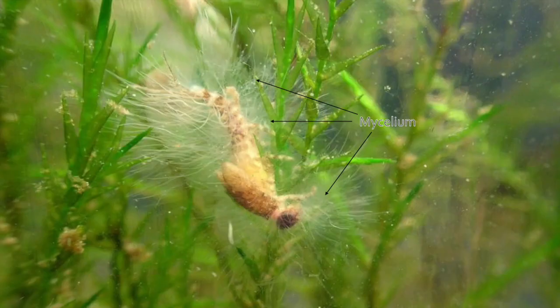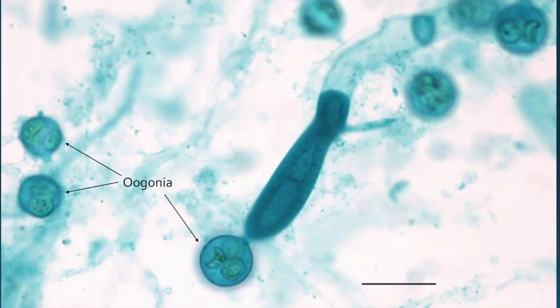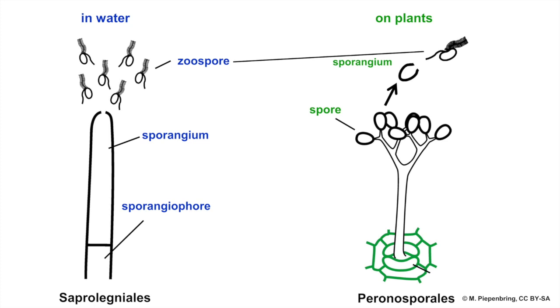Oomycetes are characterized by having a mycelial growth form, which means their bodies are comprised of microscopic threads. When they reproduce by gametic meiosis, they produce a large spherical cell called an oogonium, which contains oospores. They also produce asexual spores called zoospores, so called because they swim using two flagella — one with feathered appendages called a tinsel flagellum, and the other called a whiplash flagellum. These zoospores can swim through water to infect new hosts or to find detritus to feed upon.